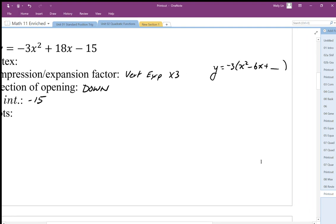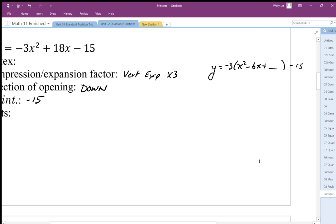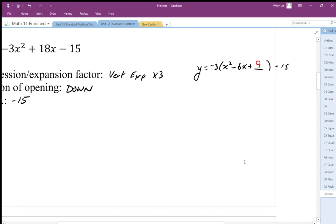Complete the square with 9. We've added negative 3 groups of 9, so we have to balance that with a plus 27 on the same side.